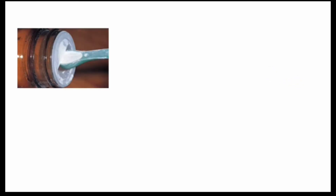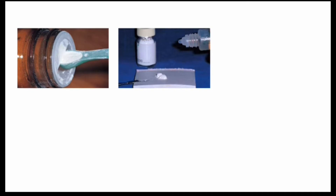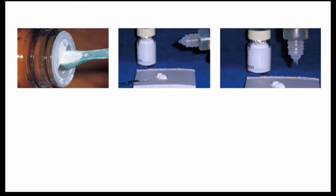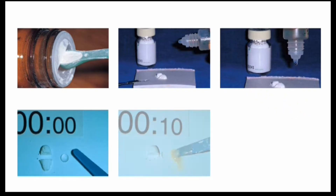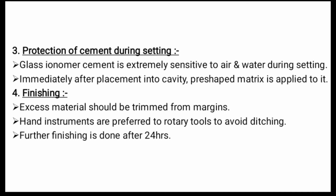In the mixing demonstration: first, take an adequate amount of GIC powder and the liquid GIC in the required ratio, then divide the powder into two equal parts. The liquid is dispensed onto the mixing pad, then mixed using sweeping and folding motion.